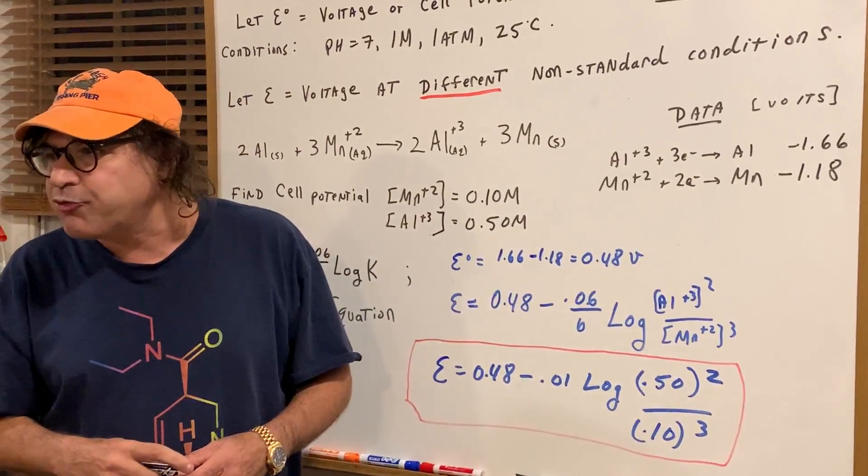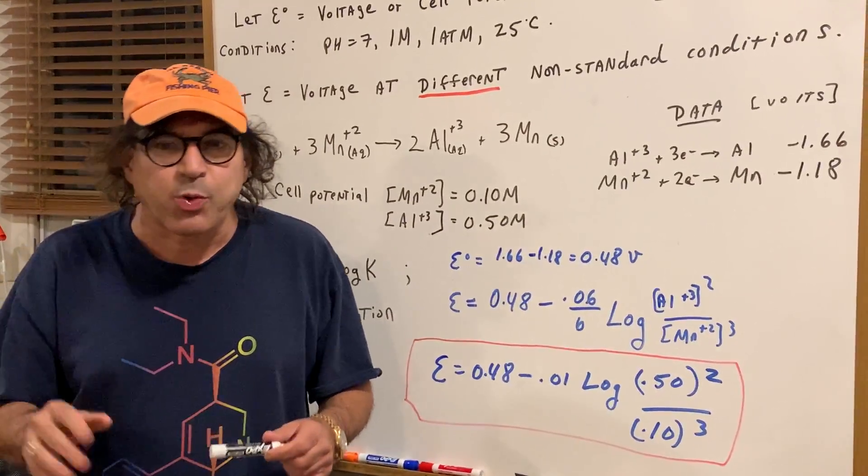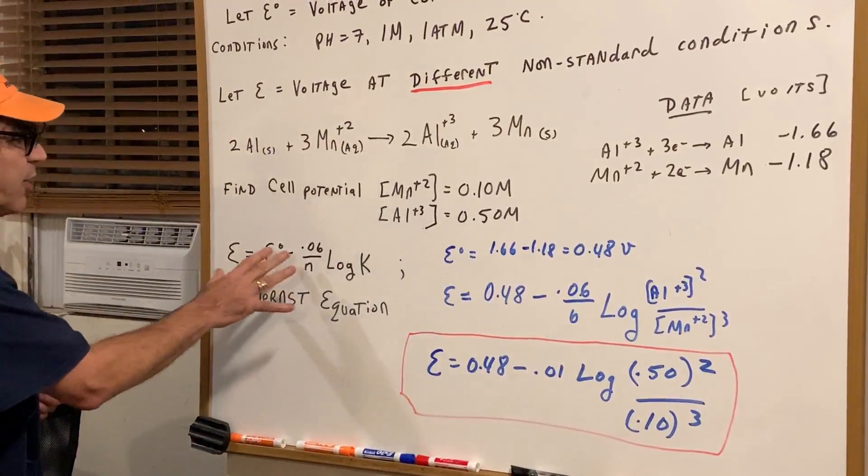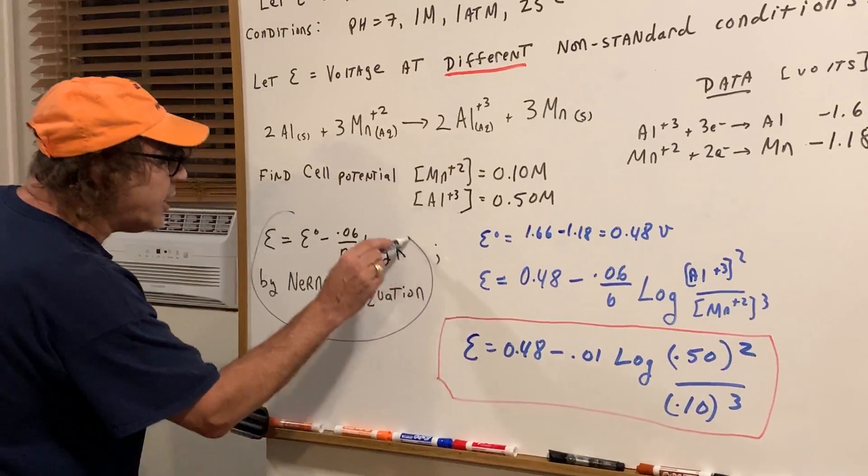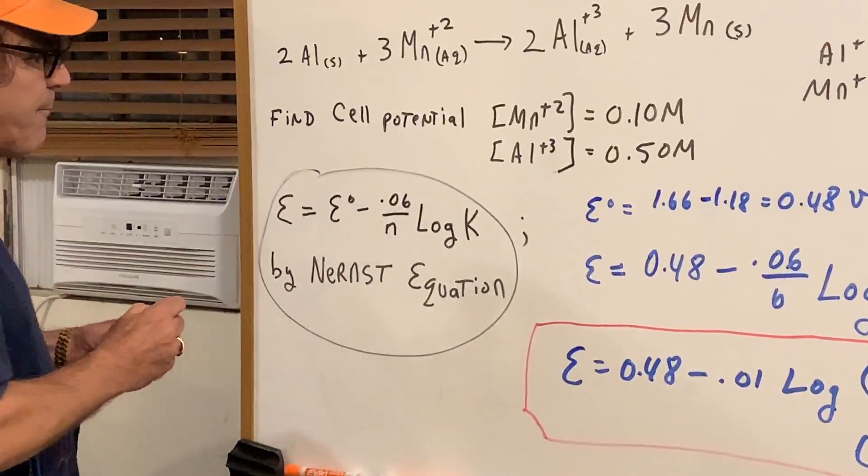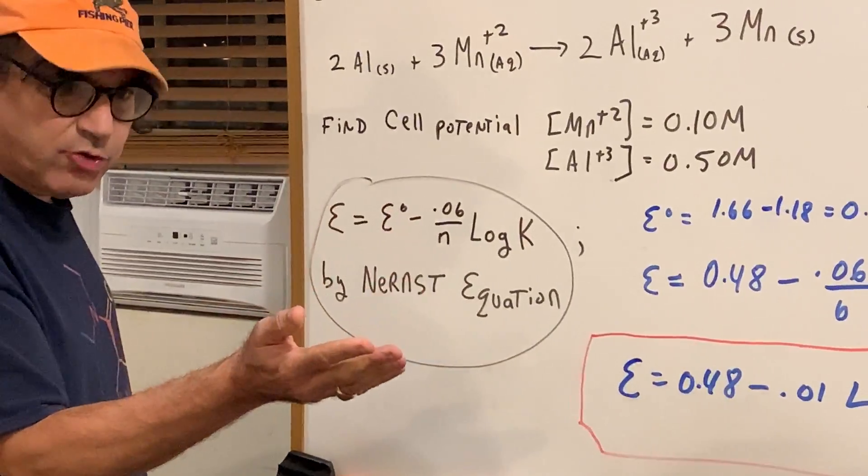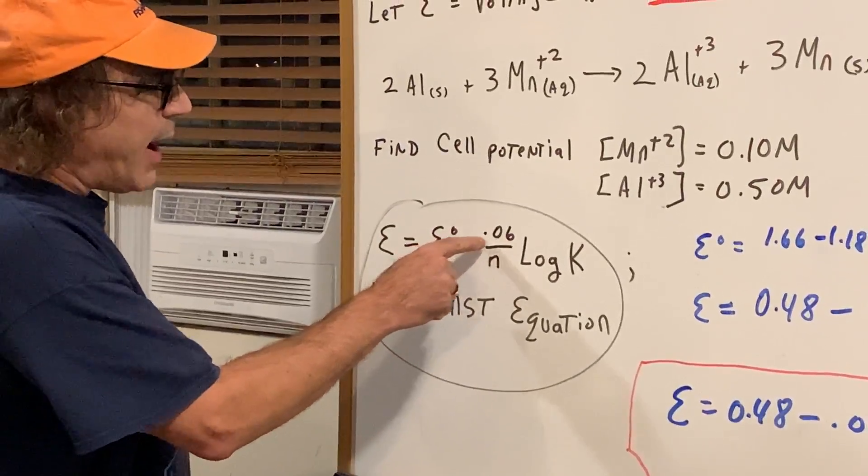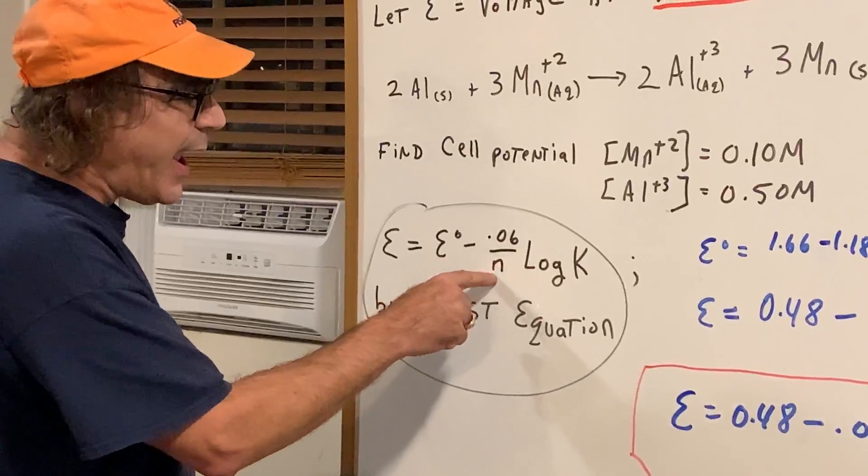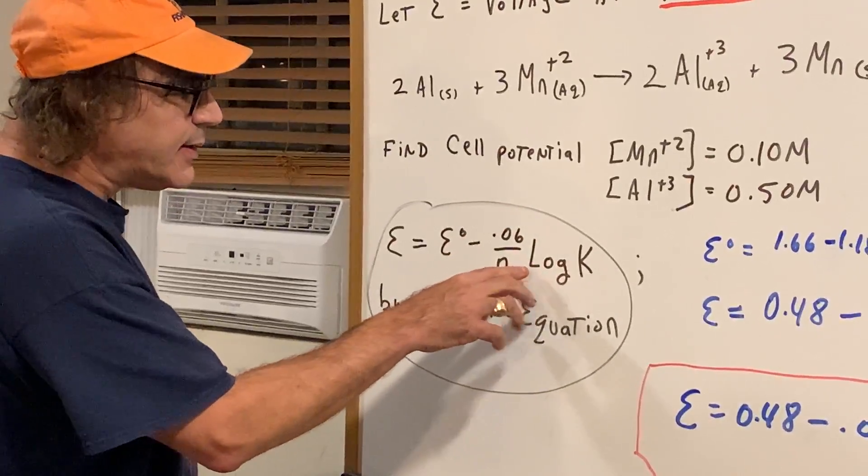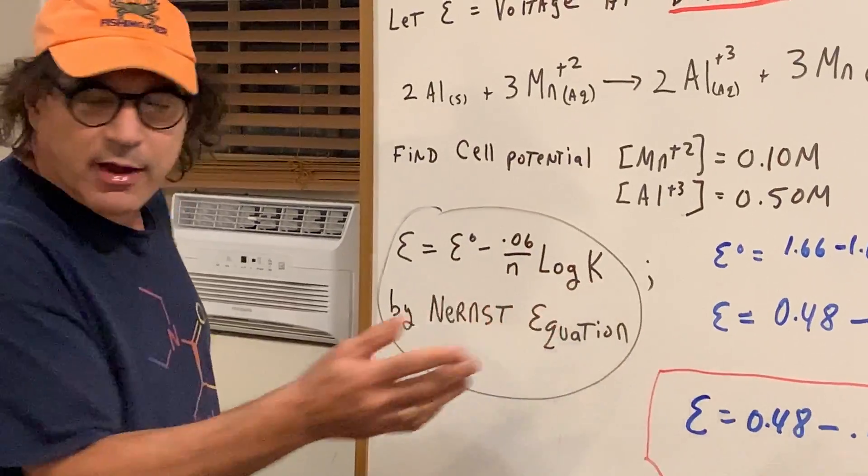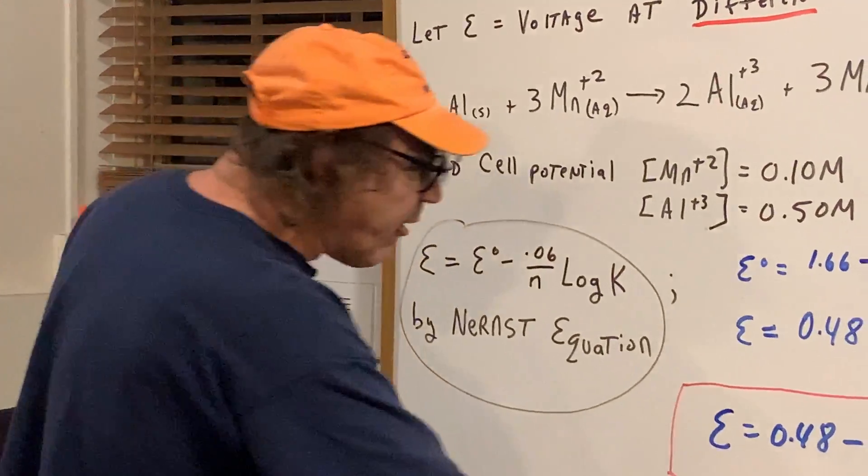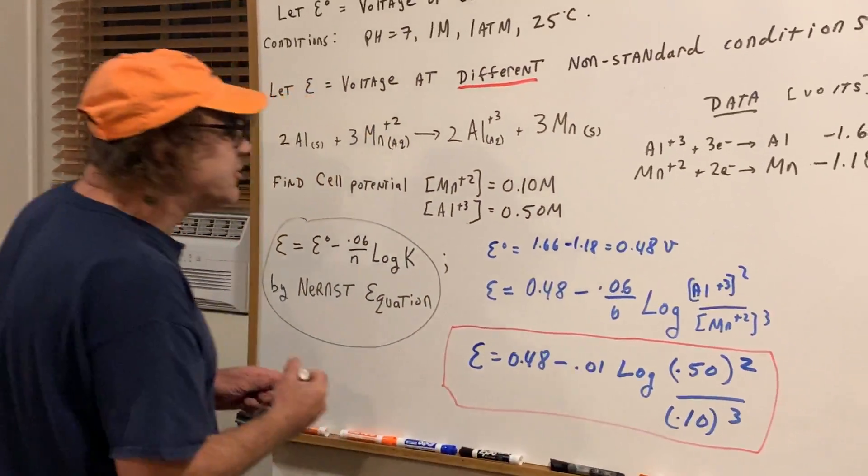The minute you see concentrations you know it's what we call the Nernst equation. Now it looks really hard but if you think about it, E meaning the voltage of the non-standard conditions is E0 minus 0.06, that's a constant, over N, and I'll explain what N is in a second, times the log of K which is the products over reactants, is the equilibrium constant.